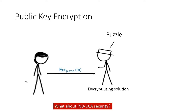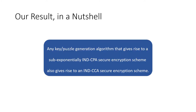In this work, we generalize the examples discussed so far and put forth the notion of compatibility of any key generation, setup, or puzzle generation algorithm, focusing on the specific case of encryption schemes. We investigate whether arbitrary setup, key generation, or puzzle algorithms can be used to derive CCA secure schemes. In a nutshell, we show that any key or puzzle generation algorithm that gives rise to a sub-exponentially secure CPA encryption scheme also gives rise to a CCA secure encryption scheme.